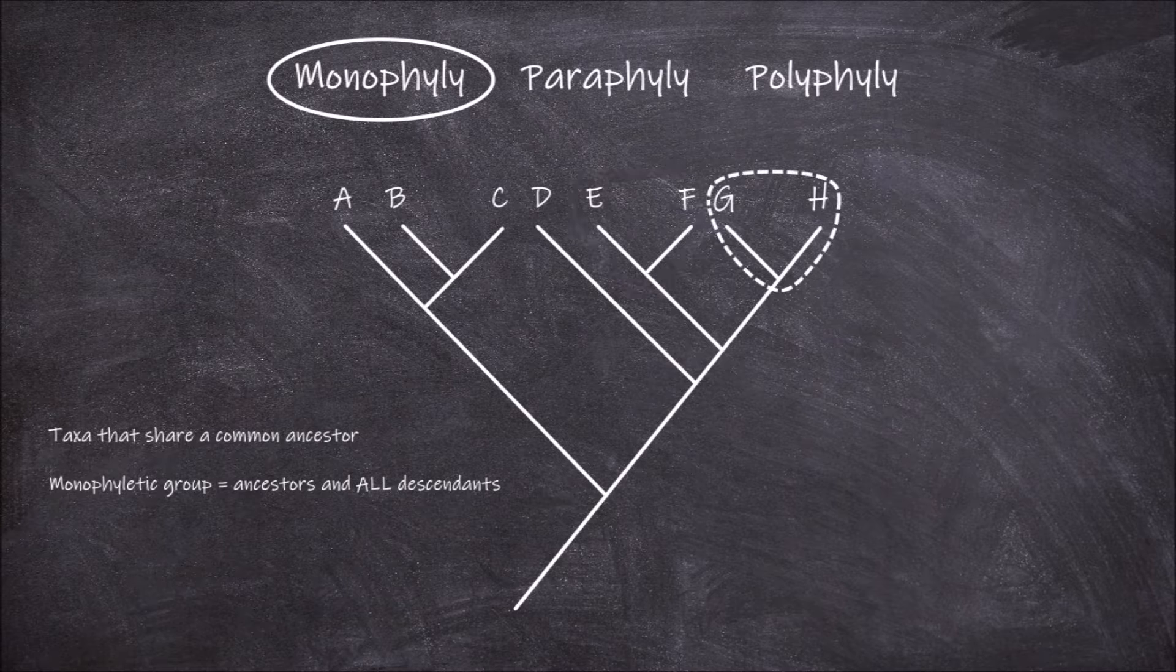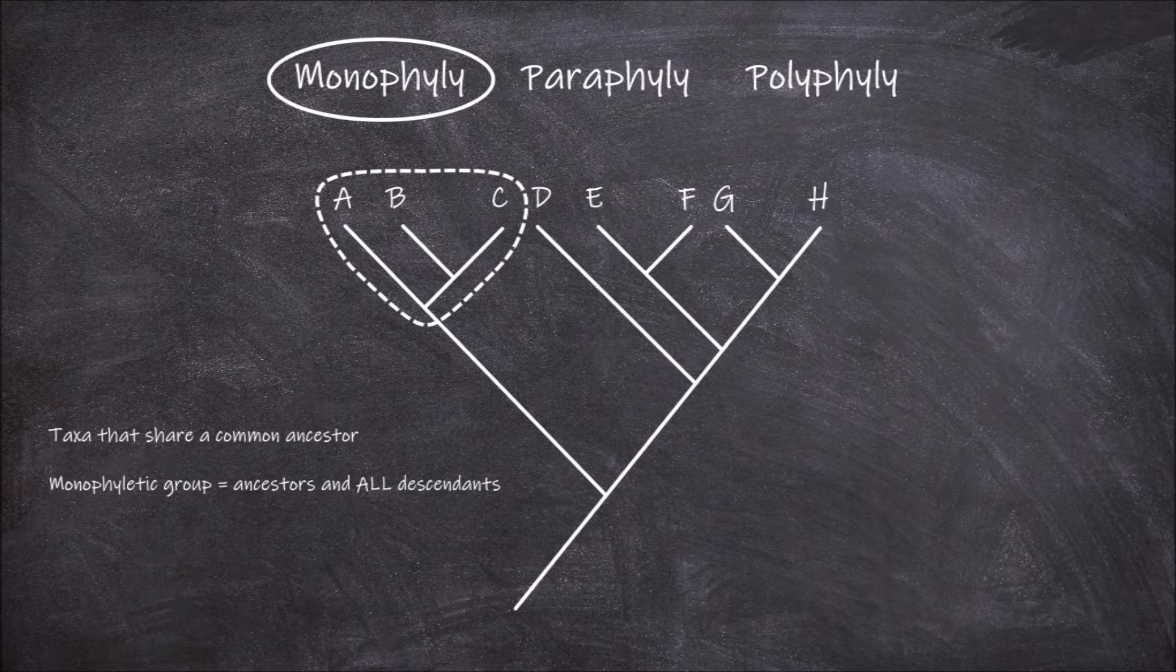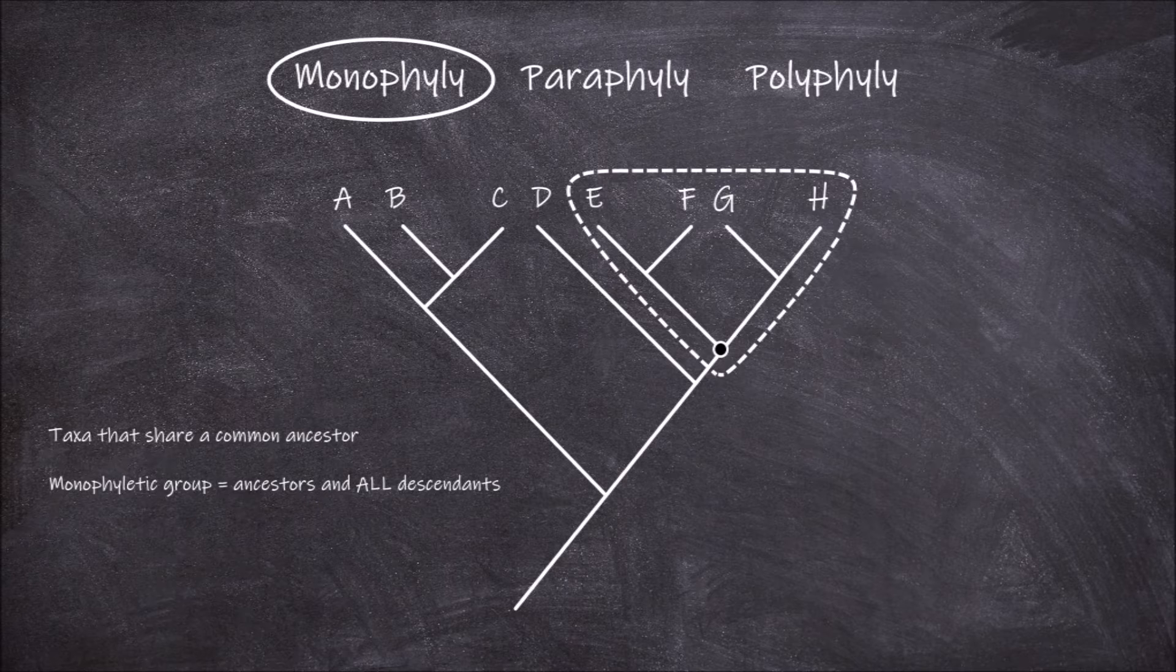In addition, G and H form a small monophyletic group with a common ancestor at this node. Up from there, the taxa A, B, and C also form a monophyletic group with a common ancestor higher up the tree at this node. E, F, G, and H form a monophyletic group.